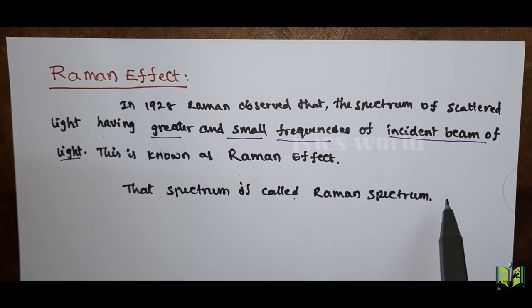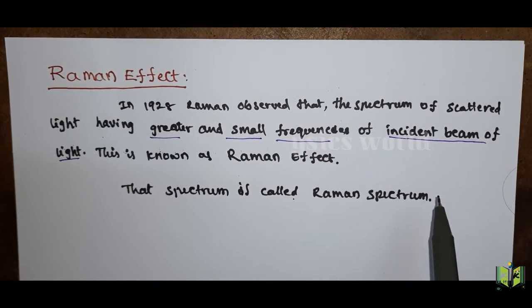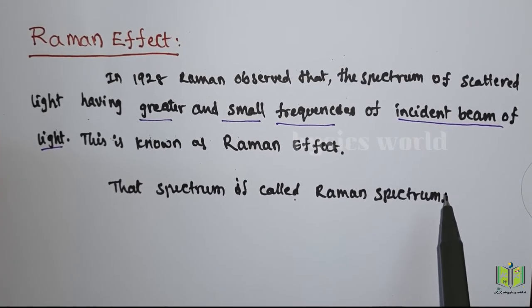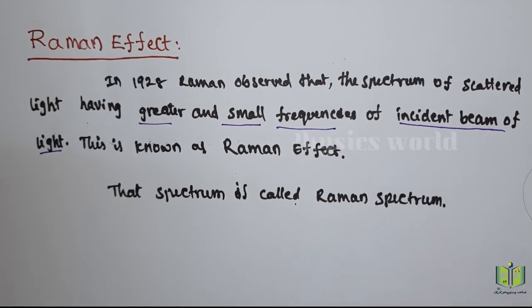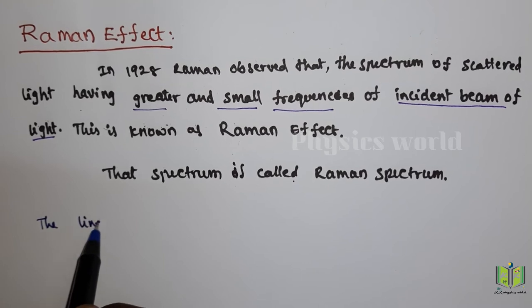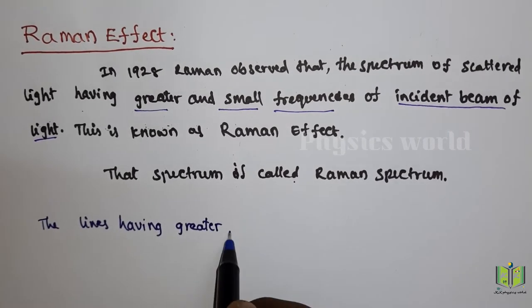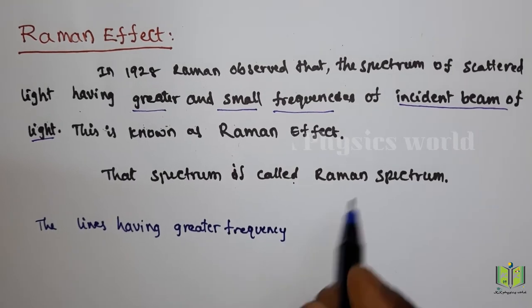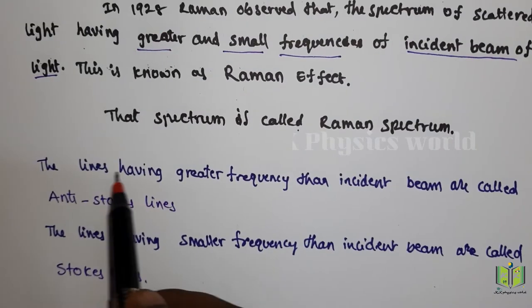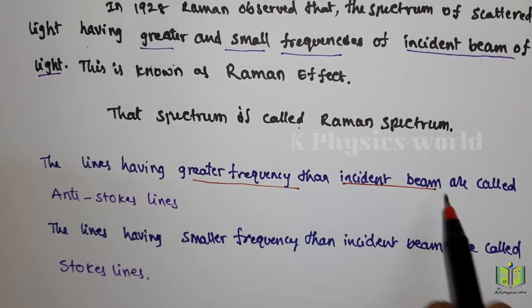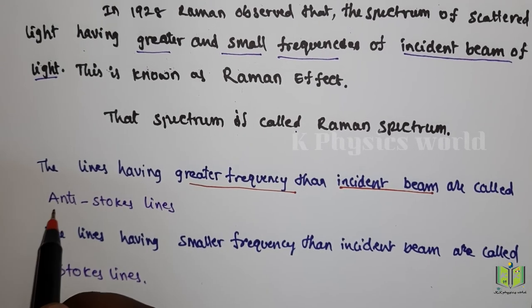Now we see what are Stokes lines and anti-Stokes lines of the Raman spectrum. The lines having greater frequency than the incident beam are called anti-Stokes lines.